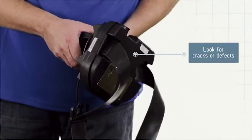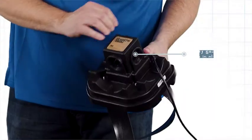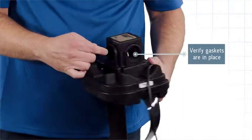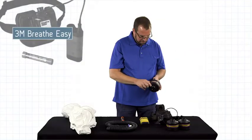Verify the service sticker. Inspect the blower housing unit for cracks or physical defects. Verify that all three gaskets are in place. Inspect and install the cartridges.